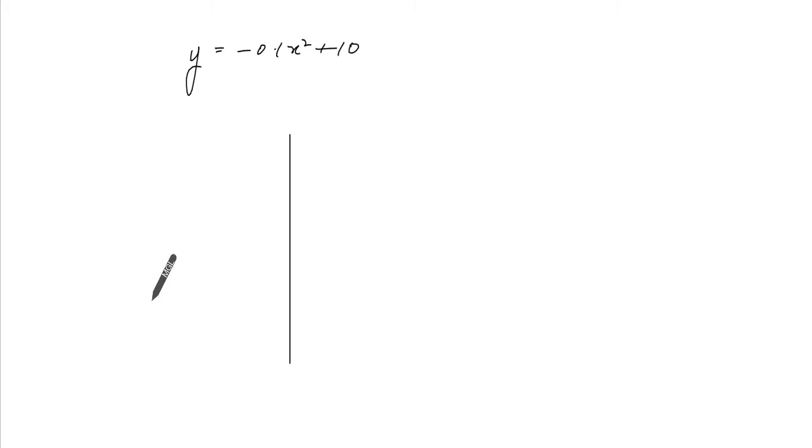So if I actually solve for 0, when does it actually hit the ground? You get minus 0.1x squared is equal to minus 10, so x squared is equal to 100, so x is plus minus 10.